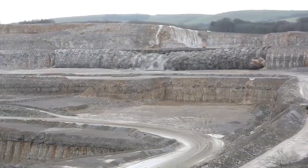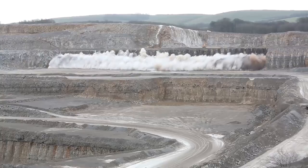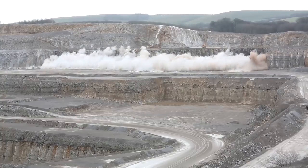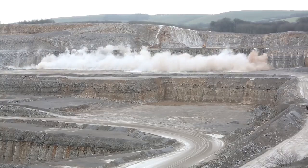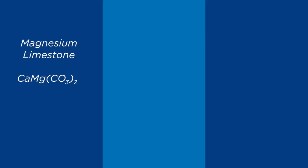Agricultural lime is a fertiliser produced from natural crushed or dolomitic limestone. A number of materials are available across the UK. The three principal types are magnesium limestone, limestone, and chalk.